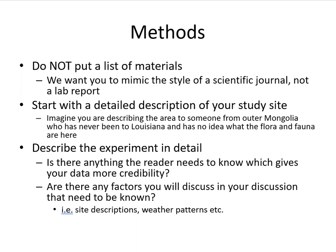To write a method section, you do not want to put a list of materials. You need to mimic the style of a scientific journal and not a lab report. You also need to start with a detailed description of your study site.